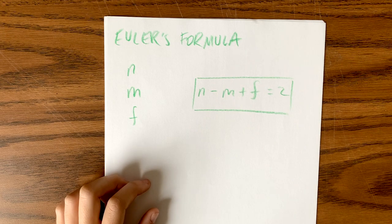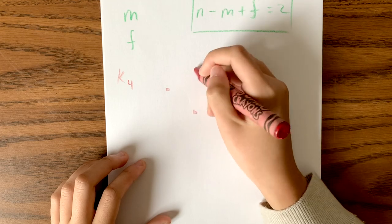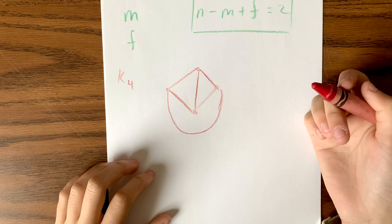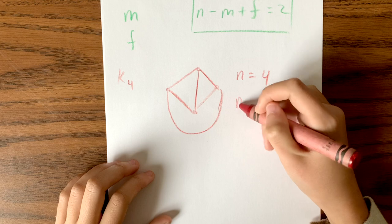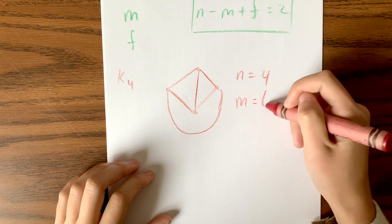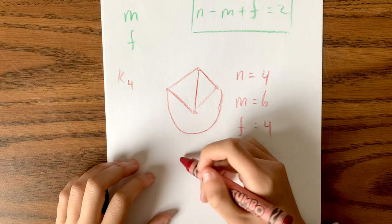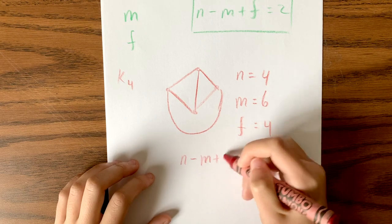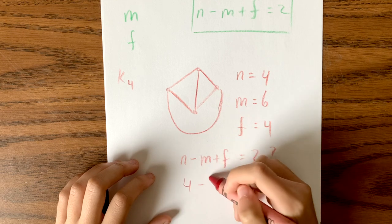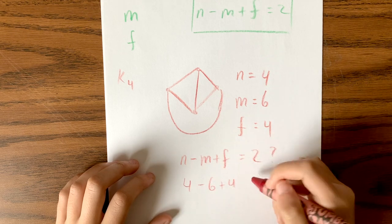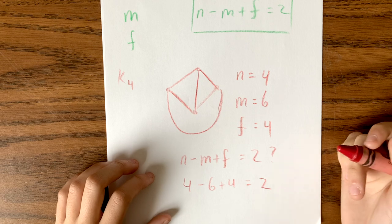Let's go back to K4. For one of its planar drawings, n equals 4 (vertices), m equals 6 (edges), and f equals 4 (faces). So n minus m plus f equals 4 minus 6 plus 4, which does equal 2. Euler's formula holds for K4.